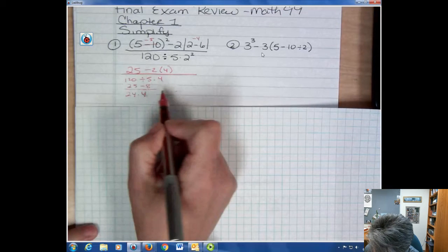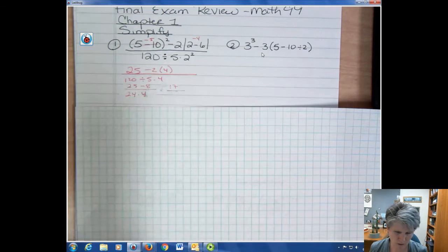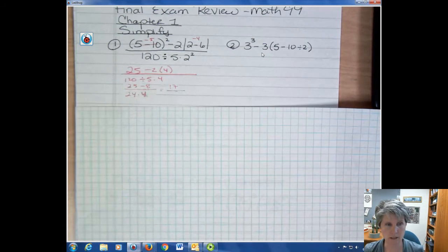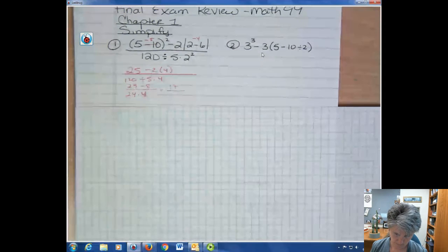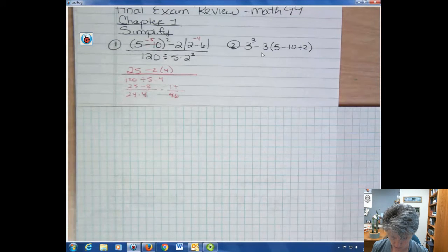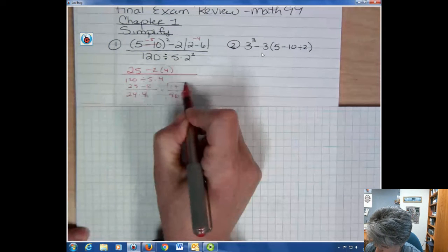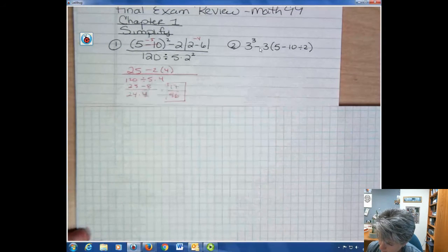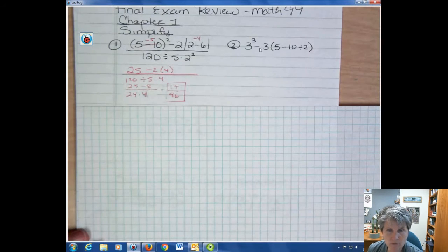25 minus 8 is 17. And 24 times 4 is 96. And if you could simplify 17 over 96 you would. I put that in my calculator quickly and see that it does not simplify. That one I'm just pointing out, you always do division before multiplication if it comes first from left to right.